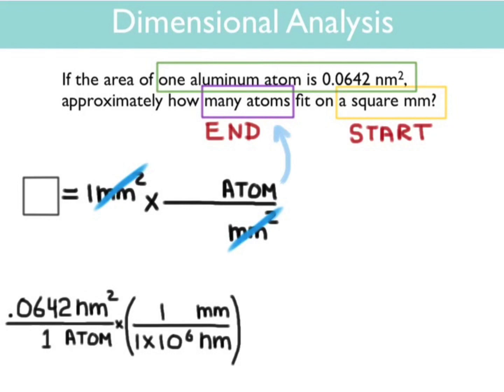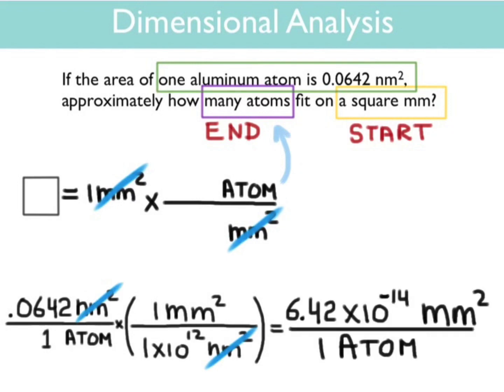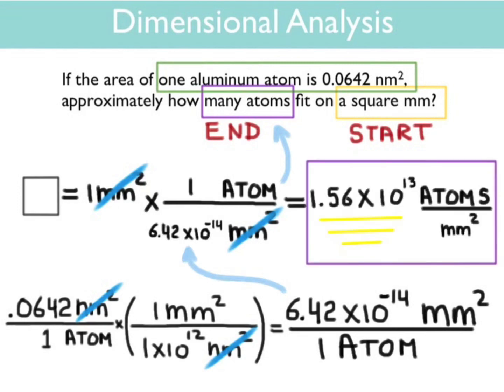It's 0.0642 nanometers squared per 1 atom. We're going to multiply that times the conversion factor of millimeters per nanometer. But remember, we need to square this because we're talking about area, and we're going to square not only the units but also the numbers, giving you that in 1 millimeter squared there's 1 times 10 to the 12th nanometers squared, or 6.42 times 10 to the negative 14th millimeters squared per 1 atom. Plug that into your conversion factor and divide. You'll get 1.56 times 10 to the 13th atoms per millimeter squared.